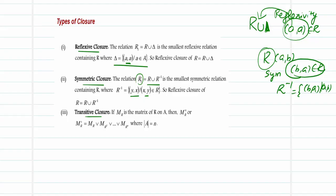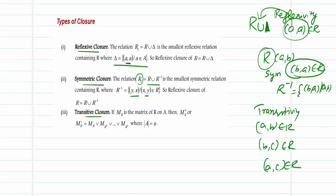For transitive closure, transitivity means whenever (a, b) and (b, c) belong to the relation, (a, c) also belongs to it. If transitivity is missing, we can add the required elements by taking the union of matrices MR, MR², MR³, and so on. This union adds up the transitivity relations, generating the new matrix defined as MR∞ or MR⁺, which satisfies the transitive closure property.